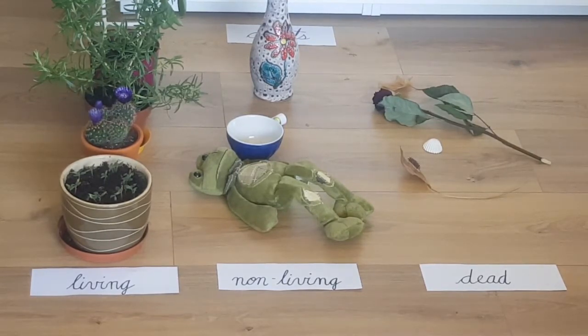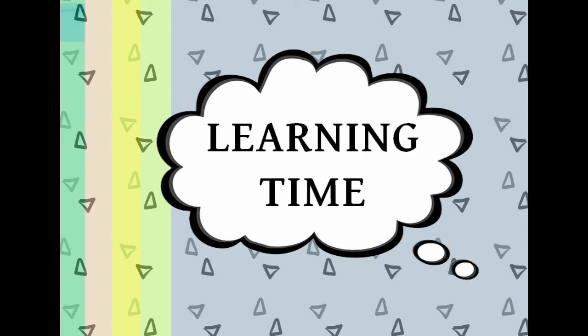Okay guys, now you know the three groups of objects. Thank you for matching them with me, I hope you had fun. Now I have a special task for you: please explore your flat and try to find the three different groups of objects — the living objects, non-living objects and the dead objects. When you do it, please draw a picture showing different examples of these groups. There is also a special worksheet on our platform — please ask your parents to print it, and your task is to cut out the objects and match them to the proper groups. I hope you are going to have fun. See you soon, bye!